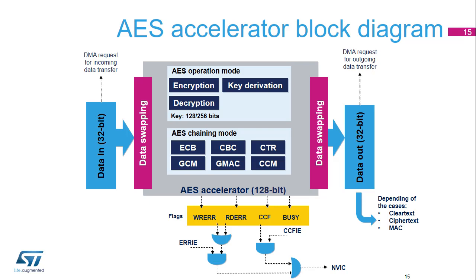The error flags block checks the behaviour of the AES Accelerator via two different flags. The READ error flag, called RDERR, is set in the AES status register when an unexpected READ operation is detected during the computation phase or during the input phase. The WRITE error flag, called WRERR, is set in the AES status register when an unexpected WRITE operation is detected during the output phase or during the computation phase. An interrupt can be generated when one of these two error flags is set, if the ERR INTERRUPT ENABLE bit, called ERRIE in the AES control register, was previously set.